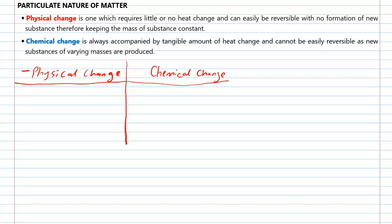When changes occur and there is no formation of a new substance, such change is said to be physical. Therefore, in physical change there is no formation of a new substance. Any change that occurs and yields a new substance or product is called chemical change. Thus, in chemical change there is formation of a new substance.